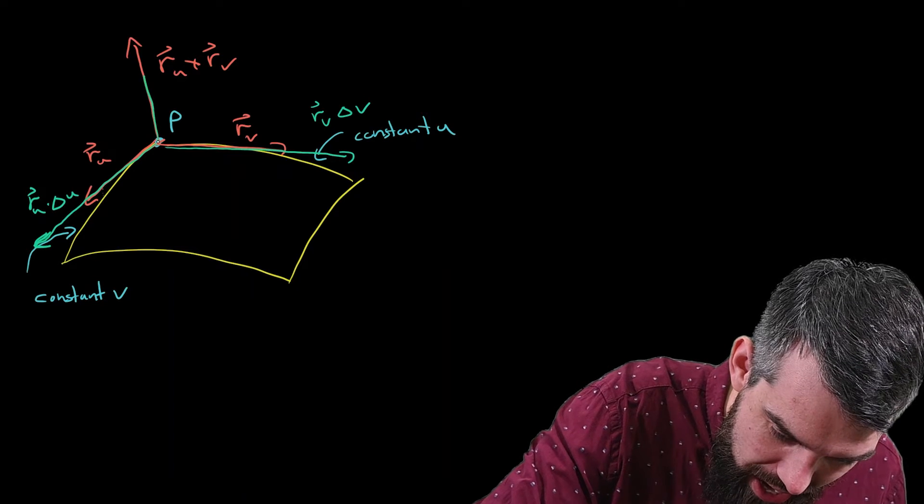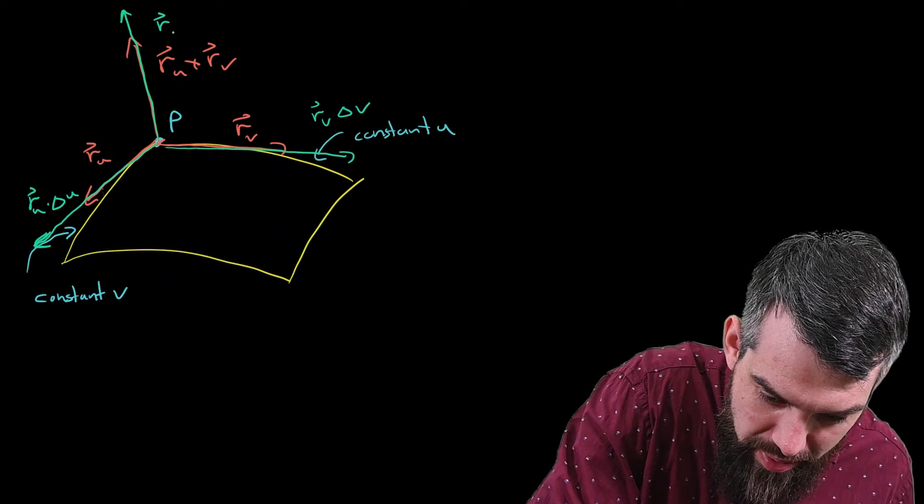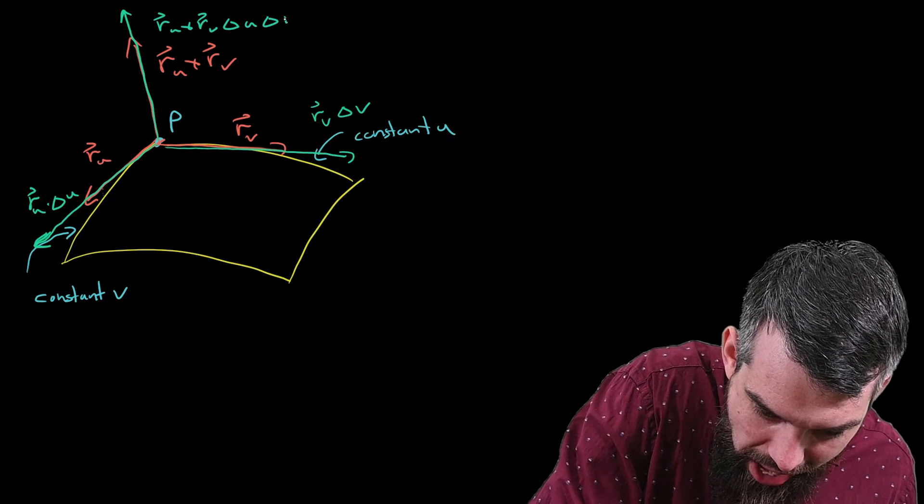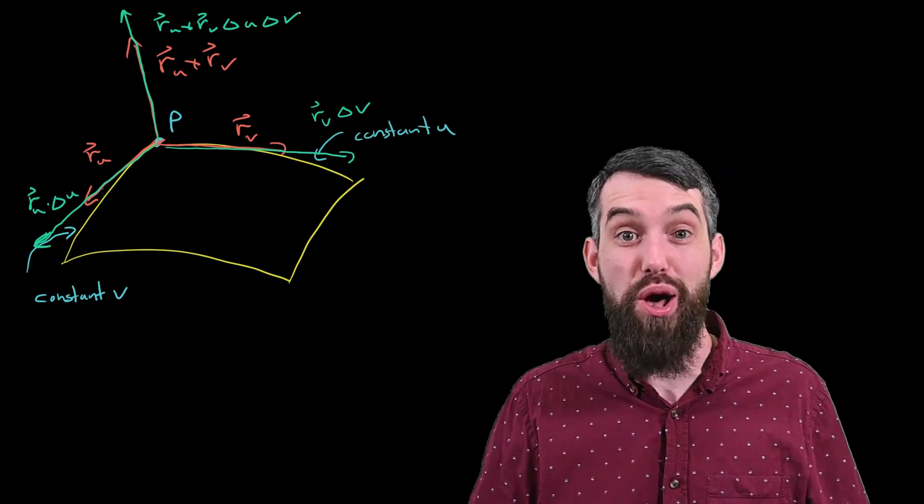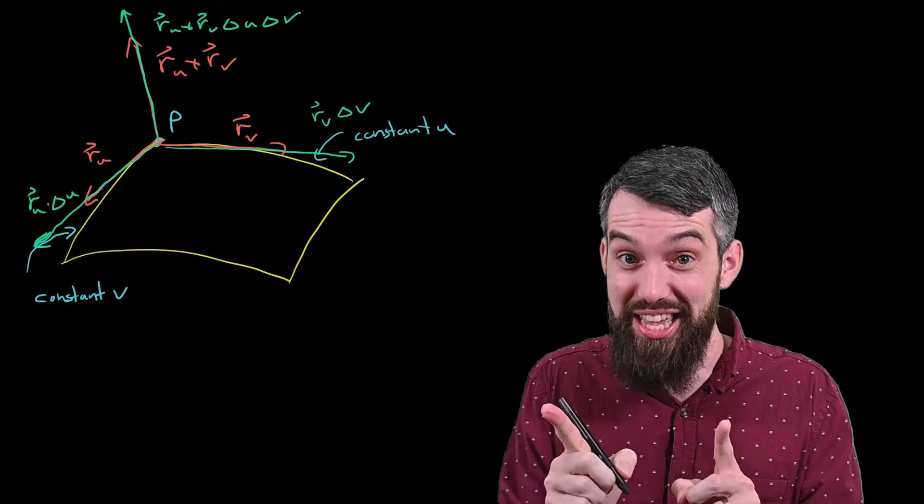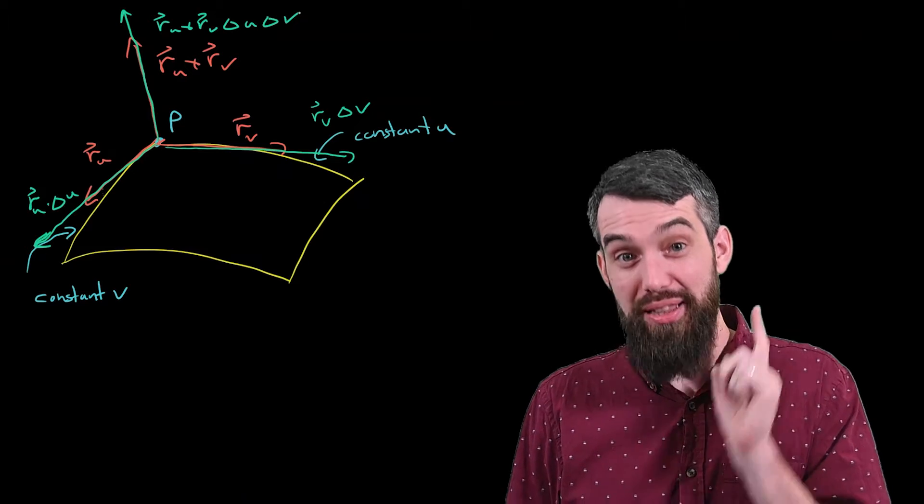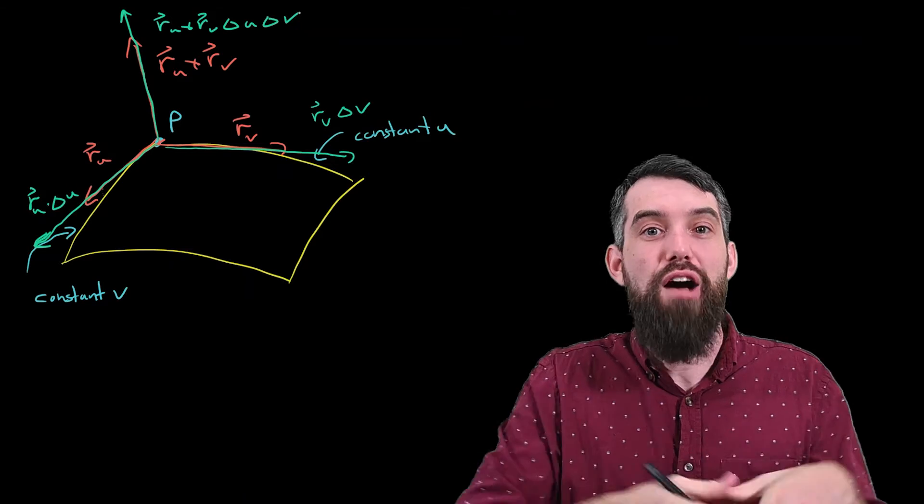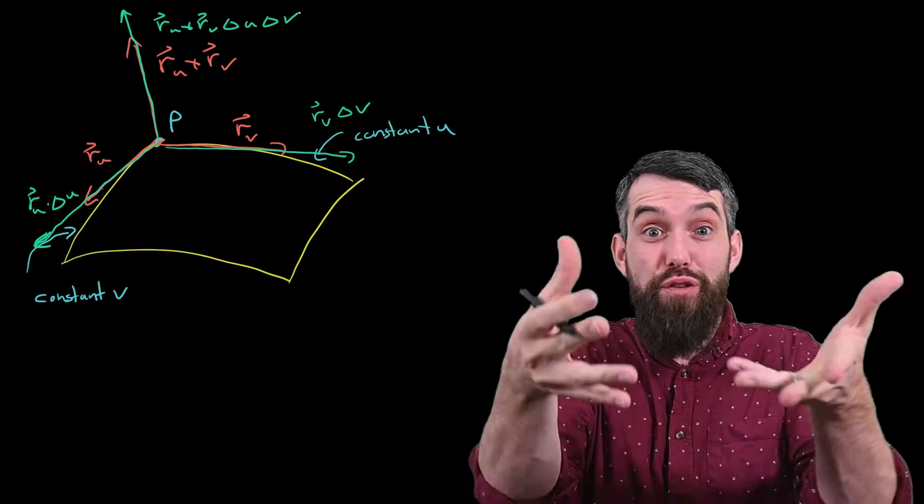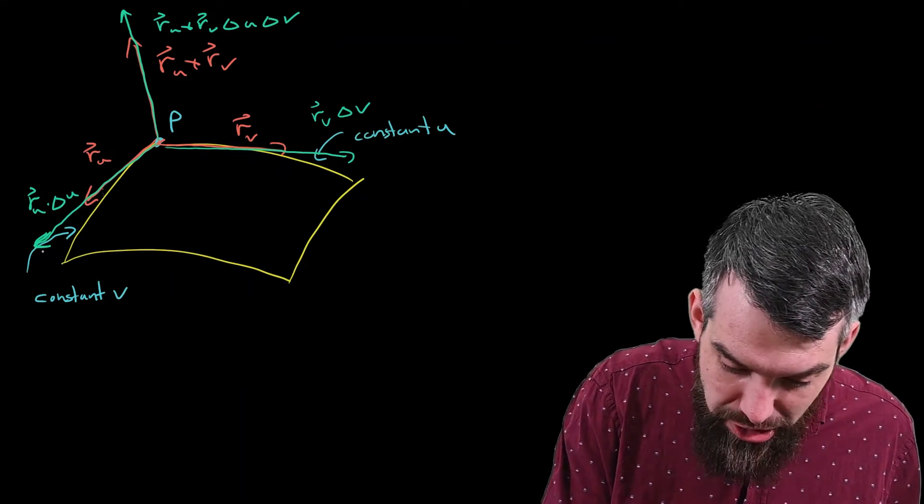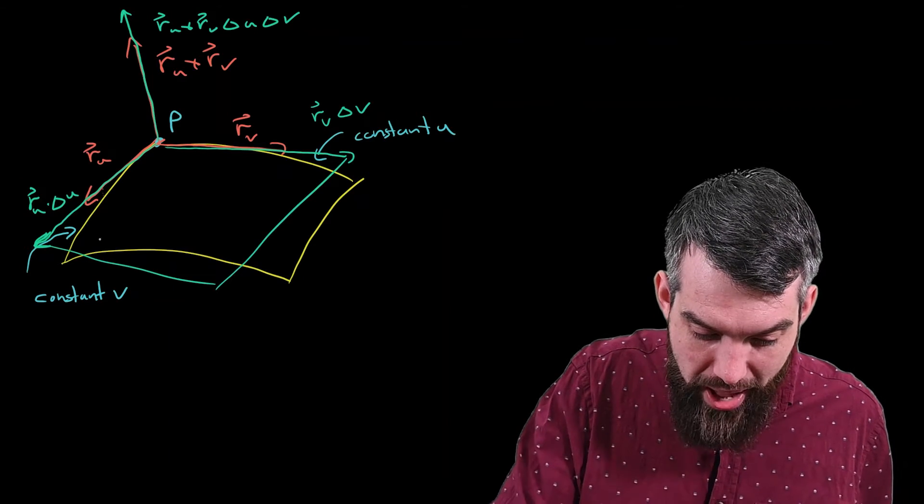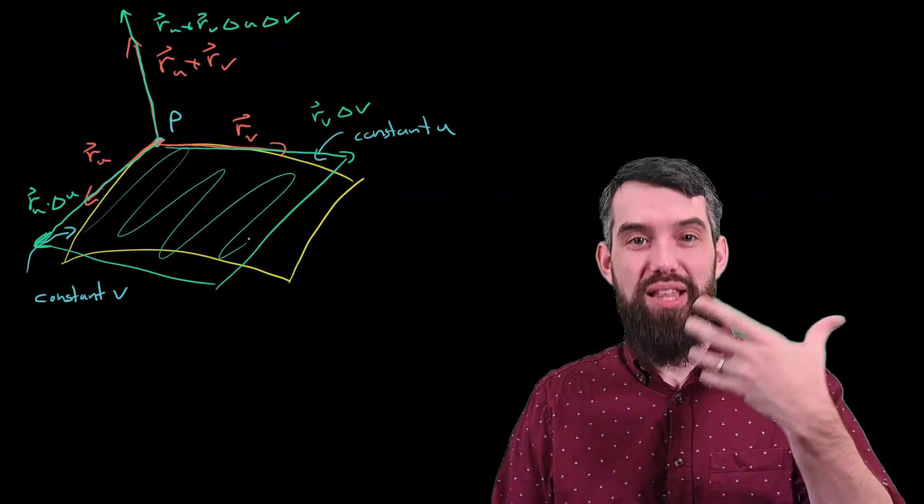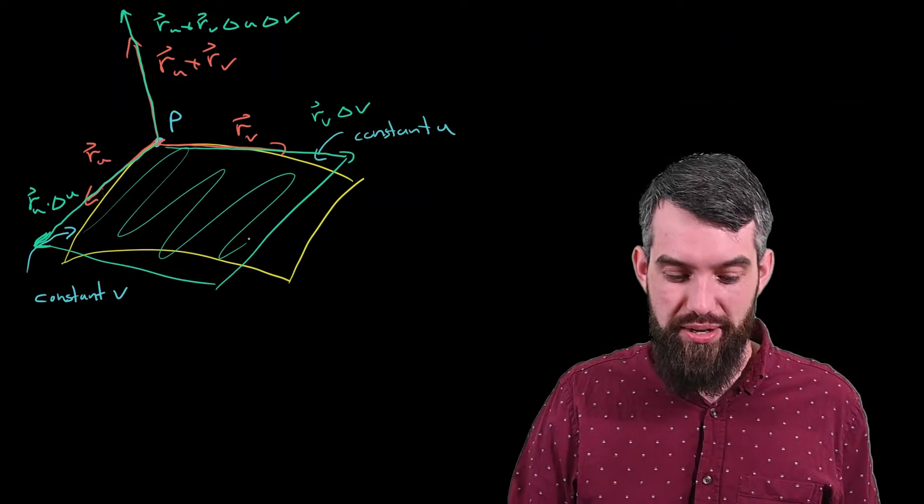And similarly, I would get another vector that would pop up and be longer up here. That would be the RU cross the RV times the delta U and times the delta V. It's just the cross product of the other two green vectors. Now, here's the key. Here's the real magic. The length of a cross product is the same thing as the area of the parallelogram of the two vectors that form the cross product. So I can imagine that there's sort of a parallelogram here, and the area of this parallelogram is given by the length of the cross product. Okay, let's write that down.